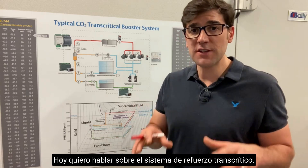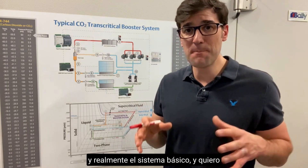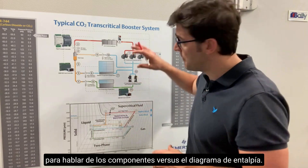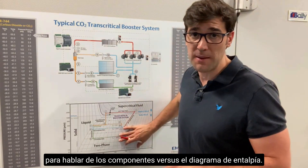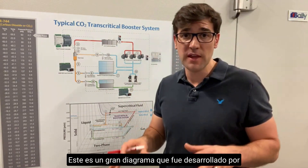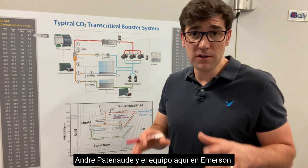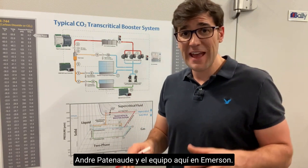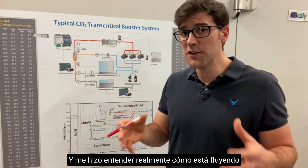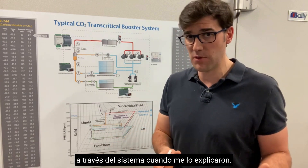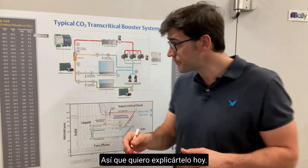I want to talk about the transcritical booster system — the basic system — and the components versus the entropy diagram. This is a great diagram developed by Andre Patteno and the team at Emerson, and it really helped me understand how the CO2 flows through the system when it was explained to me. So I want to explain it to you today.